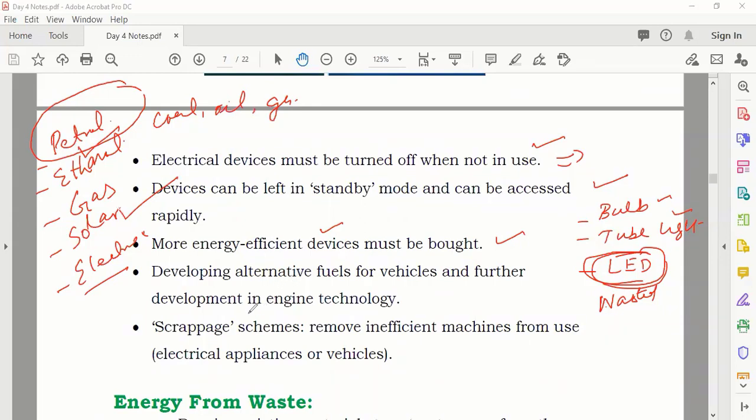After that, scrappage schemes remove inefficient machines. For example, sometimes maybe you saw in some places they will say bring your old air conditioner and take a new one, and you have to pay some money. These types of schemes are given by the government.